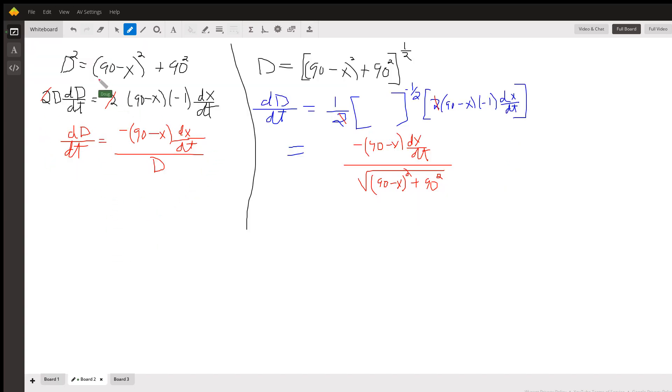I'll show you two different ways to do it. We can write that big D squared is equal to 90 minus x, the quantity squared, plus 90 squared. Again, that's using the Pythagorean theorem.